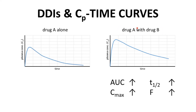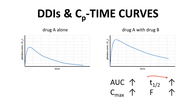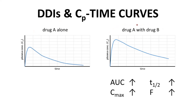The CP time curve for drug A together with drug B on the right looks similar, but we see many changes. Cmax is higher. The area under the curve is higher. The half-life is longer because hepatic clearance is reduced as phase one enzymes are inhibited. The bioavailability is higher because the hepatic first-pass effect is reduced. All these changes mean that what was a safe and efficacious dose of drug A could now be a dose that reaches levels that lead to toxicity. This is a PK-based DDI and it can lead to safety risks.